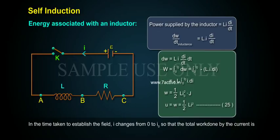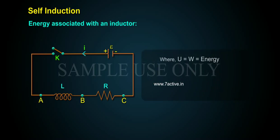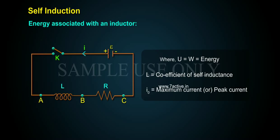Therefore, U equals W equals 1 by 2 LI squared, equation 25, where U equals W equals energy, L is coefficient of self-inductance, I naught is maximum current or peak current.